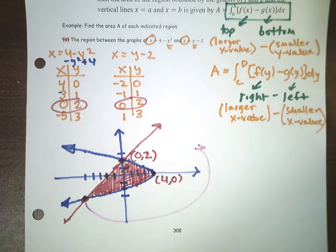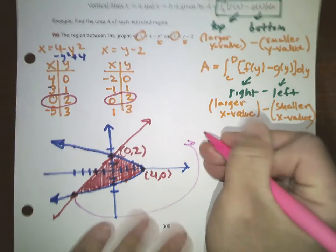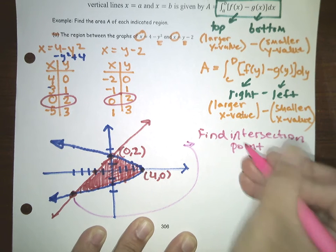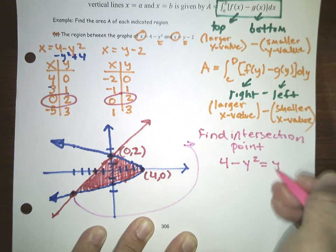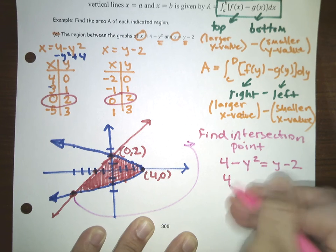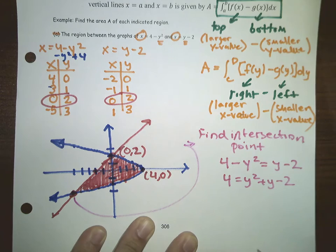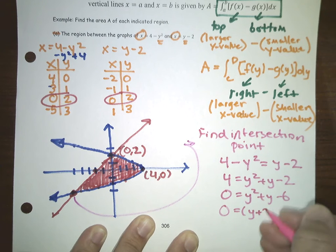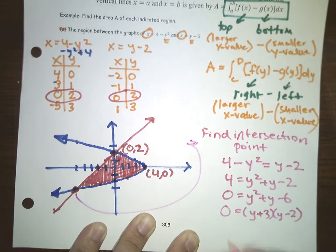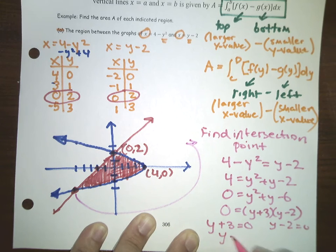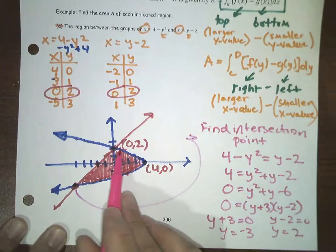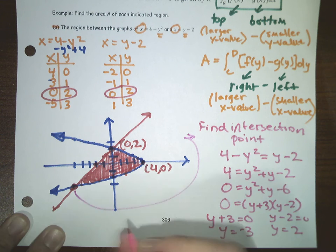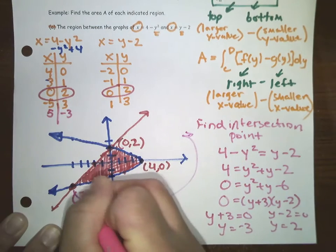I can find that intersection point fairly easily. Since these were both equal to x, I'm going to set them equal to each other: 4 minus y squared = y minus 2. Then add y squared: 4 = y squared + y minus 2. Then subtract 4: 0 = y squared + y minus 6. I can factor this into (y + 3)(y - 2) = 0, so y could be negative 3 or y could be 2.